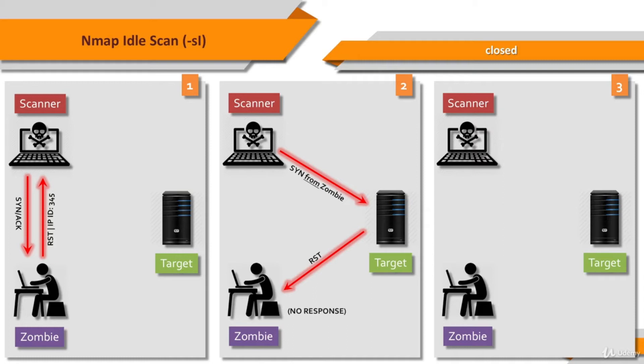The third step is to probe the zombie's IPID again. The attacker sends a SYN/ACK to the zombie again. The RST packet of the zombie has an IPID which is increased by only one since the first step, so the port is not open.